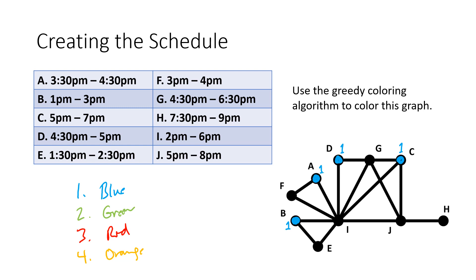Now we get to E. E is directly connected to vertex B, which is already colored blue, so we need to use color number two for vertex E. Next up is F. F is directly connected to A, which is already colored with color number one, so we have to use color number two for F. Next up is G. G is connected to a couple of blue vertices, but not connected to anything green, so G can also be green — color number two. H isn't connected to anything that has a color yet, so H can once again be color number one, blue.